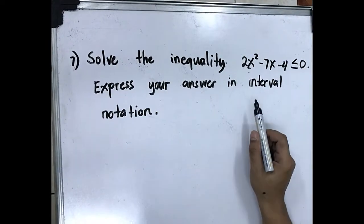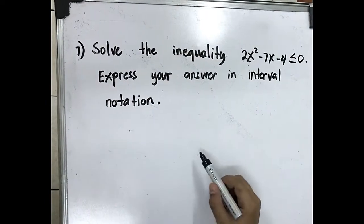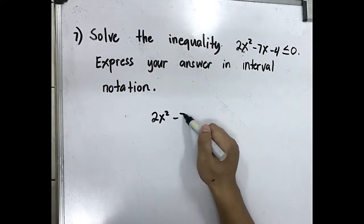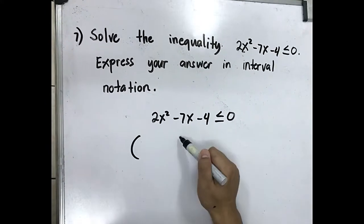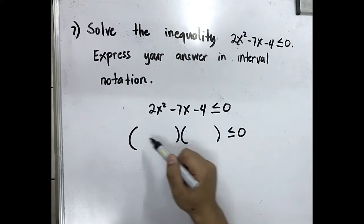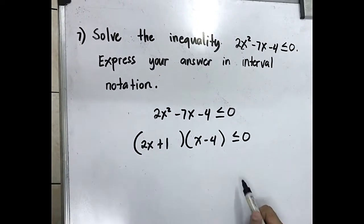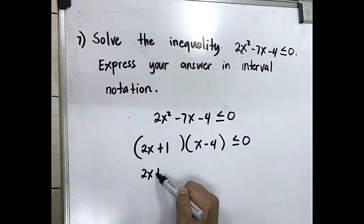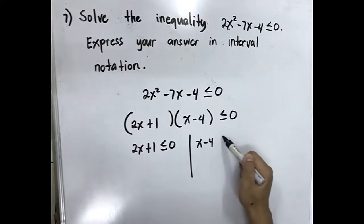Solve the inequality: 2x squared minus 7x minus 4 less than or equal to 0. Express your answer in interval notation. Get the equation 2x squared minus 7x minus 4 less than or equal to 0. Factor: 2x plus 1 and x minus 4. Then solve for x: 2x plus 1 less than or equal to 0, and x minus 4 less than or equal to 0.